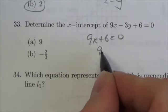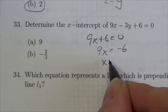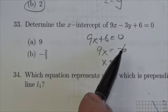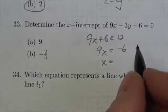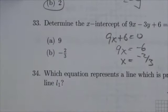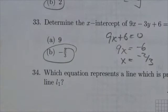I can bring the 6 over so 9x is equal to negative 6, and when I divide I'll get negative 6 over 9, but that can be reduced to negative 2 over 3. I can see my option is right there. The answer is B.